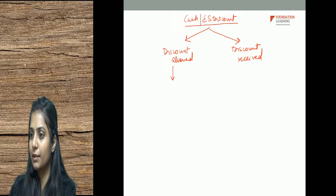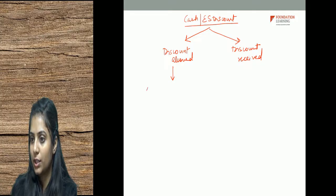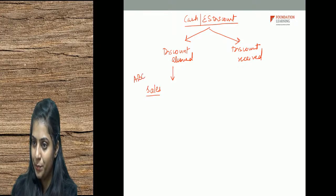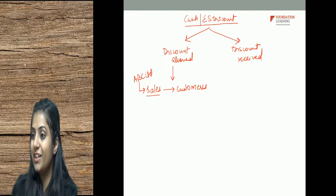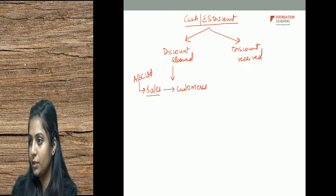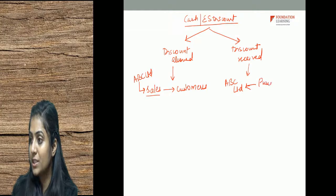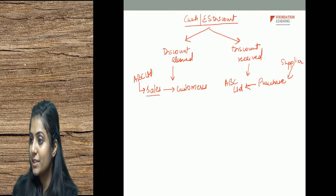Discount allowed — when I am ABC Limited and making sales, I allow discount to my customers. Discount allowed means to give discount to the customers — I am the one giving the discount. Discount received — when I am ABC Limited and making purchases, my suppliers are giving me the discount, so I am receiving it — that is why it is called discount received.